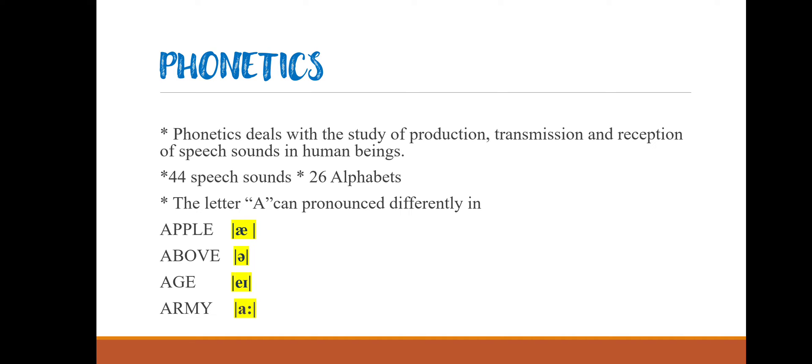Phonetics deals with the study of production, transmission, and reception of speech sounds in human beings. The production of speech sounds is integral in the study of pronunciation. There are 26 alphabets and 44 distinctive speech sounds in the English language. For example, the letter A can be pronounced differently in the words apple, above, and age. The 26 alphabetical letters represent 44 speech sounds in phonetics.